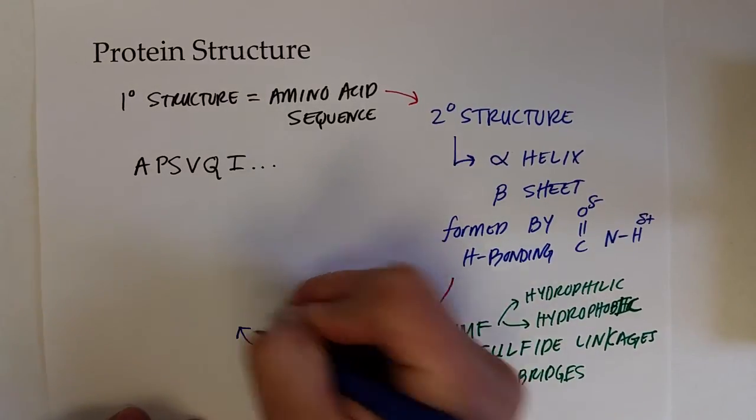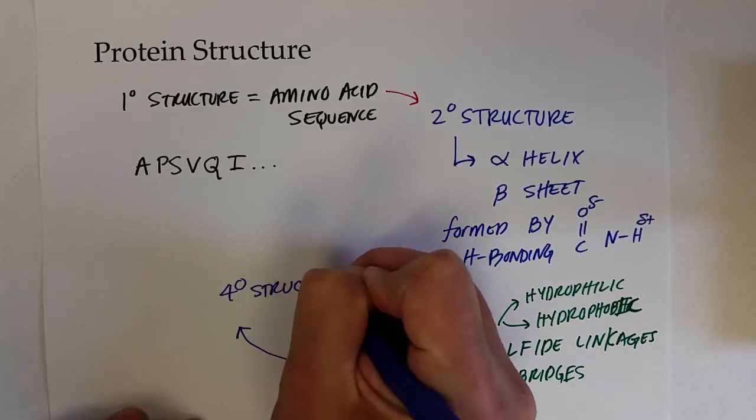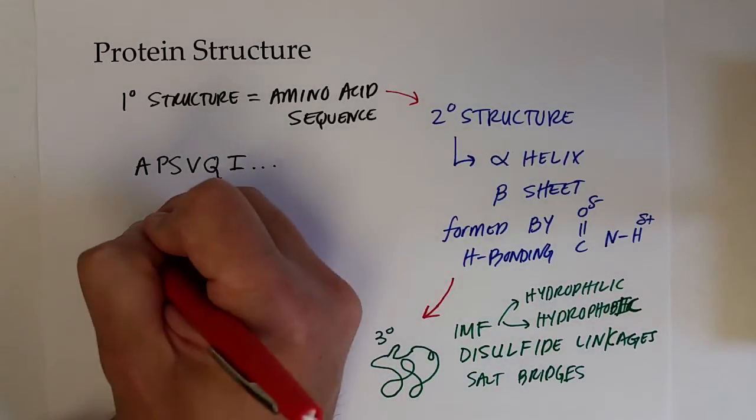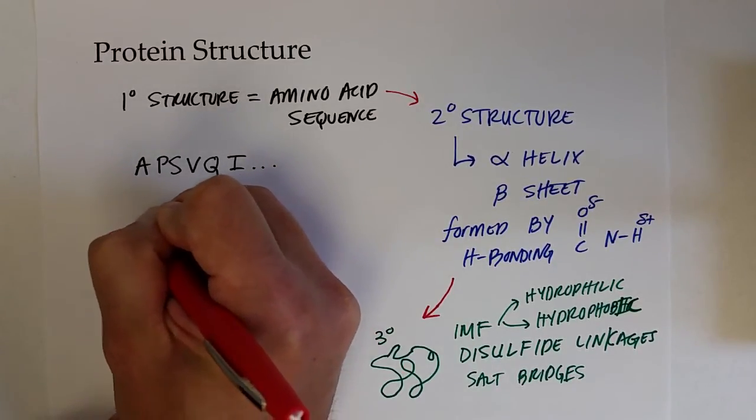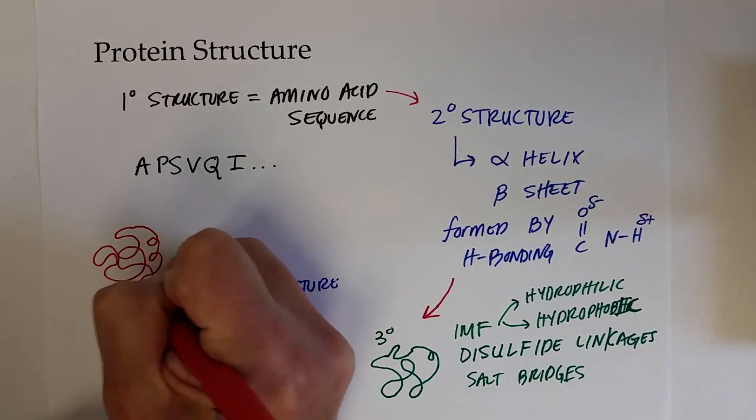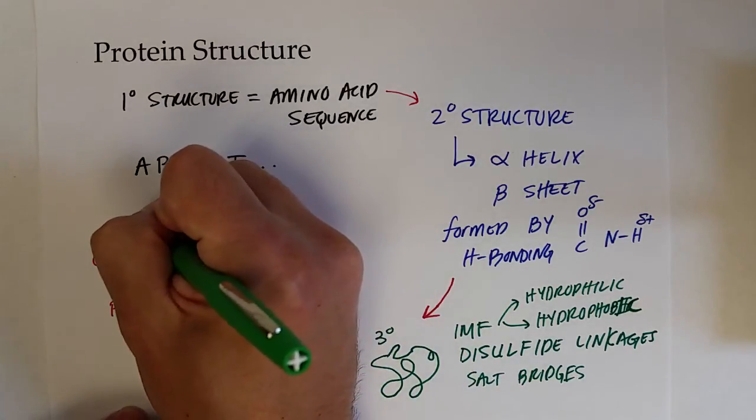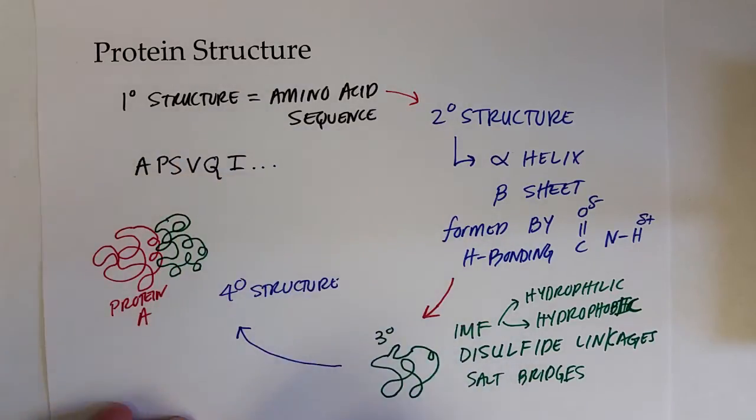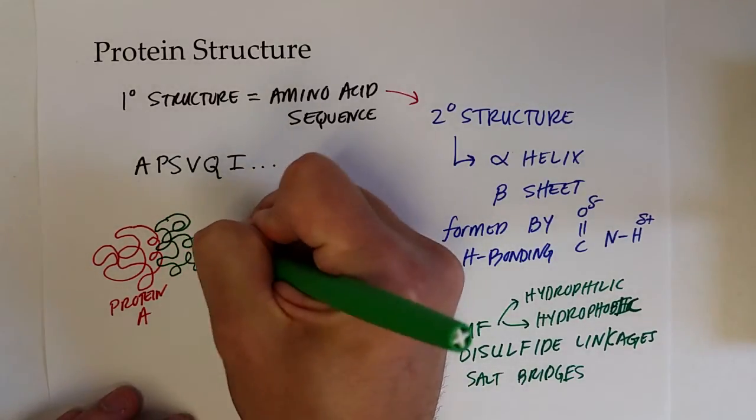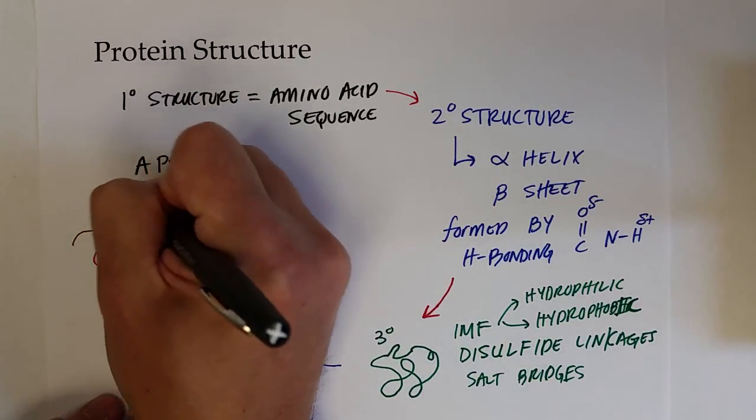Where two or more proteins—here's one squiggly line to represent a protein, so we'll call this protein A—can form a protein complex based on intermolecular forces and other processes similar to the tertiary structure with a second protein called protein B. And this of course would be a protein complex.